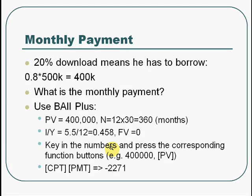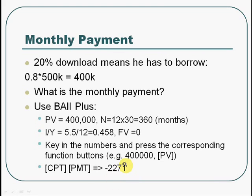To calculate this, just key in the numbers and press the corresponding function buttons. For the present value, key in $400k and press PV. Similarly, enter N, I/Y, and FV. After that, to compute the payment, press CPT (compute) and then PMT. It will give you minus $2,271. This is negative because it is a cash outflow — it is opposite to the present value you keyed in.